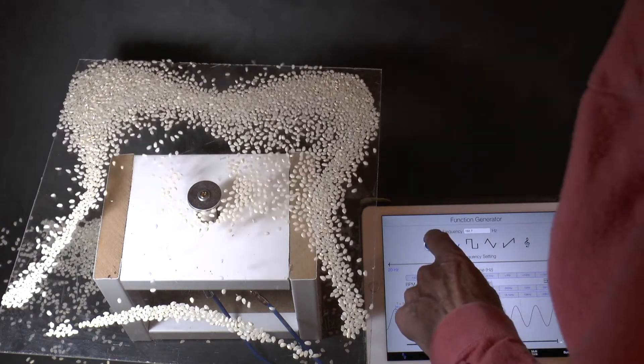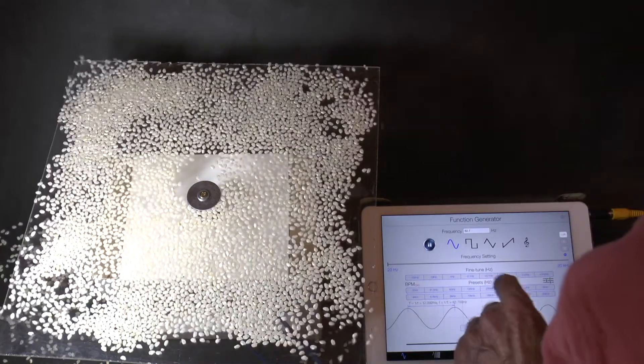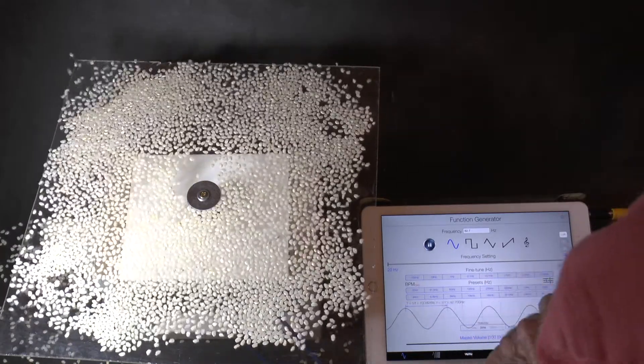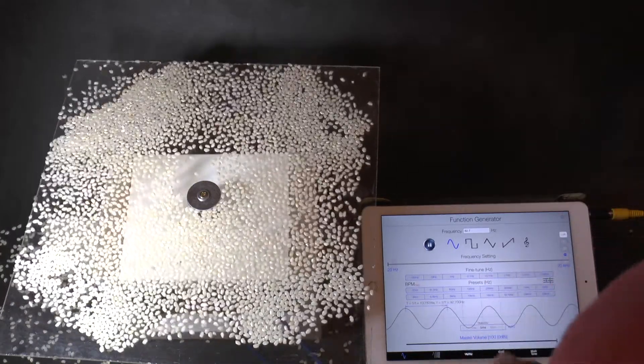We sprinkle on a bit more rice and alter the frequency of the generator. Then the pattern is completely different.